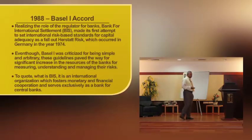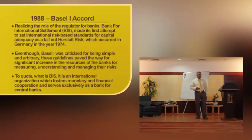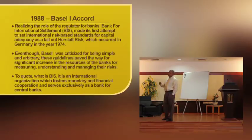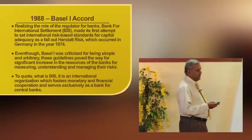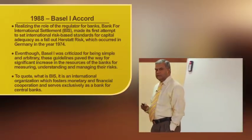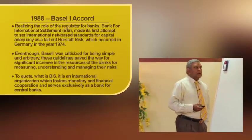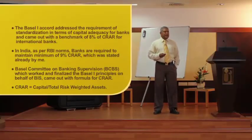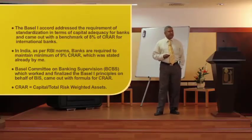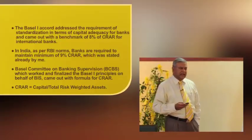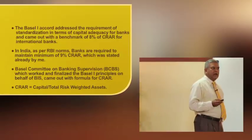BIS is an international organization which fosters monetary and financial cooperation and serves exclusively as a bank for central banks — it is the central bank of central banks. The members of BIS are central banks: from India, RBI is a member; from the US, the Fed Reserve is a member; for Japan, the Bank of Japan is a member. The Basel Accord addressed the requirement of standardization in terms of capital adequacy for banks, coming out with a benchmark of 8% CRAR for international banks. In India it has become 9% as stipulated by RBI.